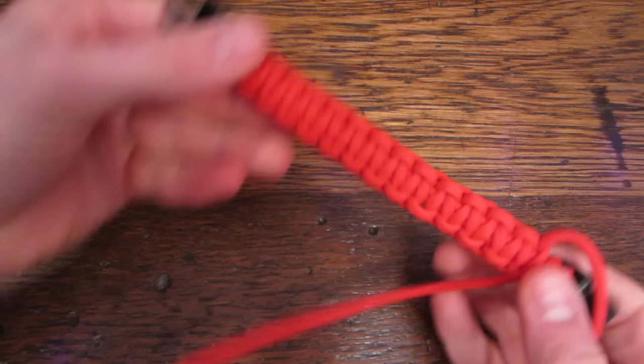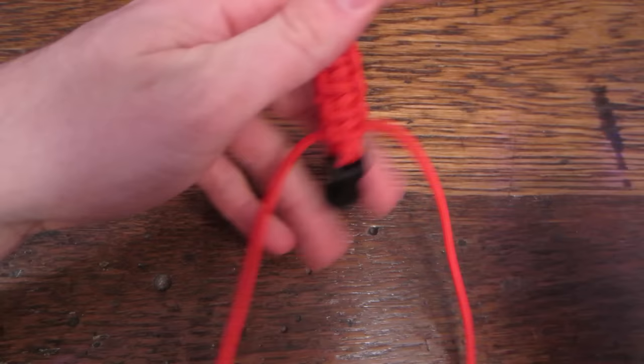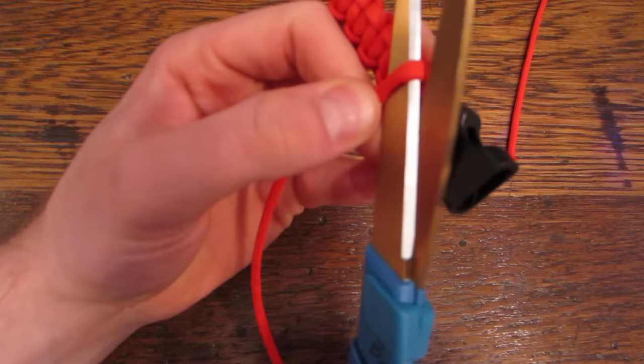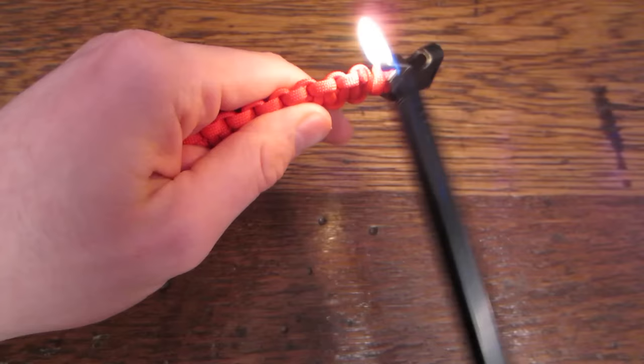Do one last knot, pull that tight, now you have your bracelet. We're left with the two tag ends, we're going to snip those off, keeping it close to the bracelet so we keep it clean. Then we're just going to singe the ends just a little bit to keep the bracelet clean and keep it from unraveling.